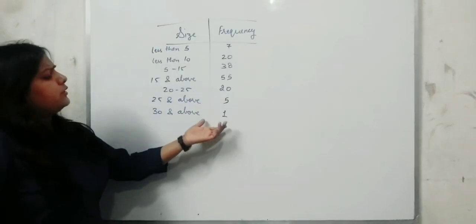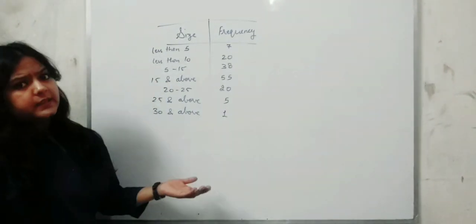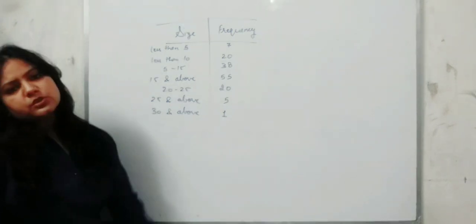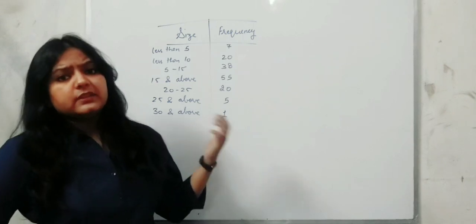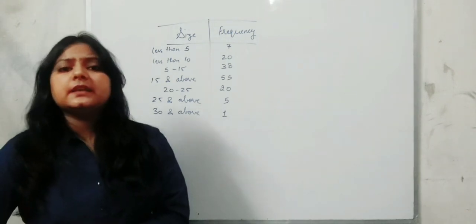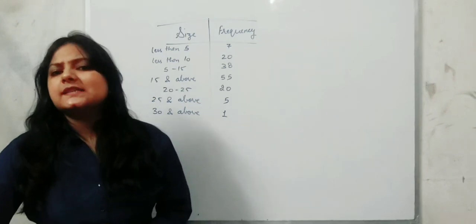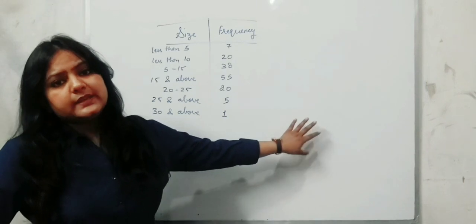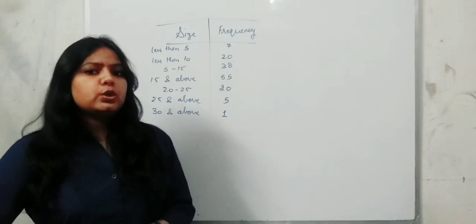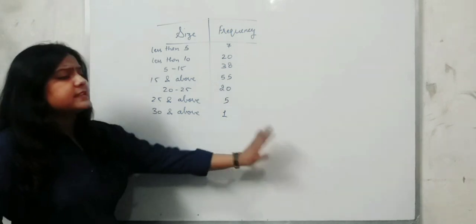Students, here I have given you a question where both less-than and more-than are given together, and we need to convert this to a normal CI series. Obviously we use the concepts of both less-than and more-than conversion together to convert this to CI. One more thing — this type of question is very important for Vidya Pit students, as such questions appear every year in the paper. You can see that less-than and more-than are both given and we need to convert them together into CI.